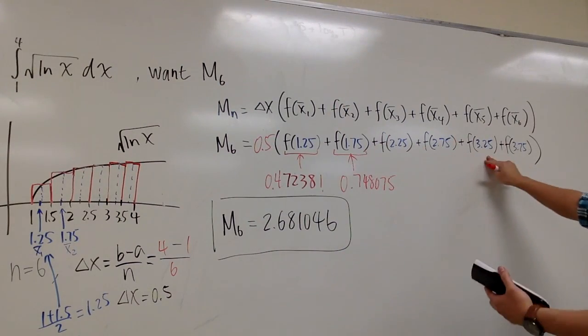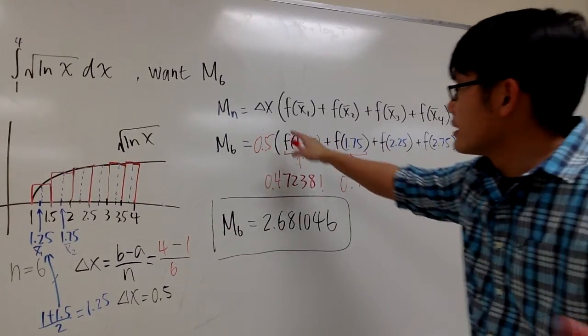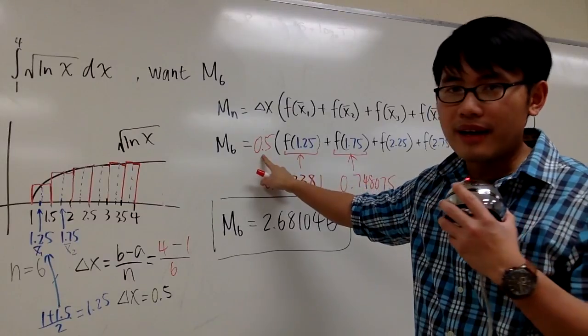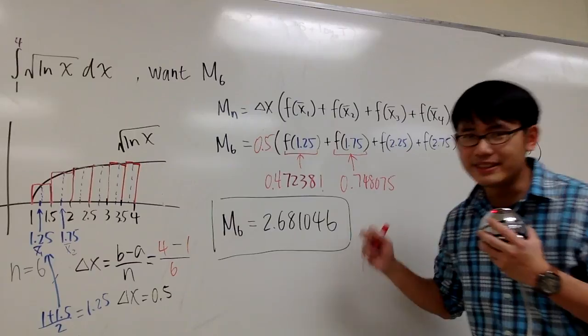At the end, you add them all together. And then don't forget that delta x is 0.5. So at the end, you multiply by 0.5. And finally, you should get this for the answer. This is it.